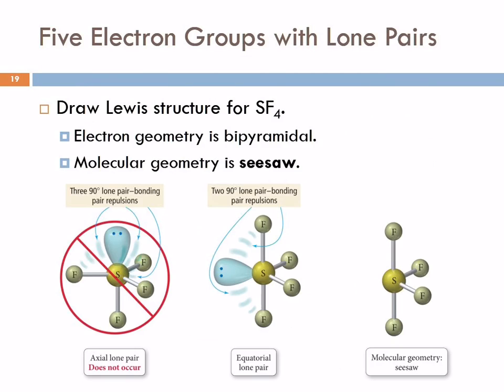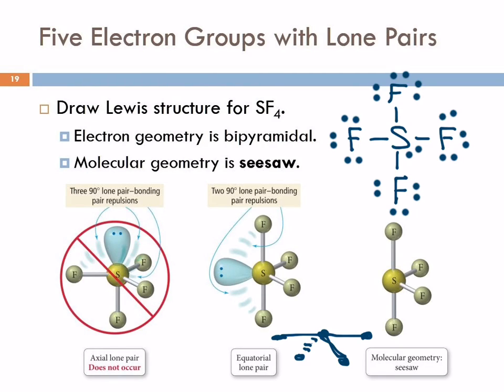So electron geometry is trigonal bipyramidal? Yeah. The electron geometry is trigonal bipyramidal. I don't know if I made a mistake or if it was like that in the book. It is trigonal bipyramidal. Not that there's another bipyramidal, but that's what we called it earlier.